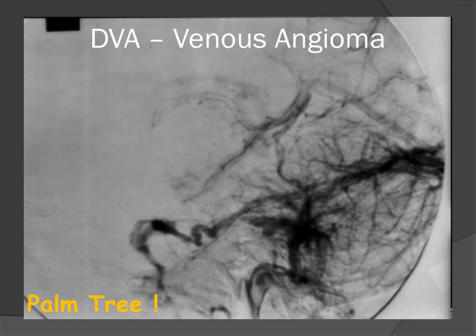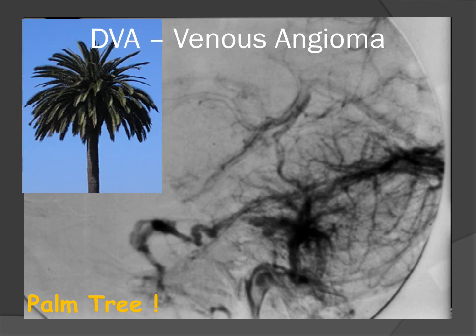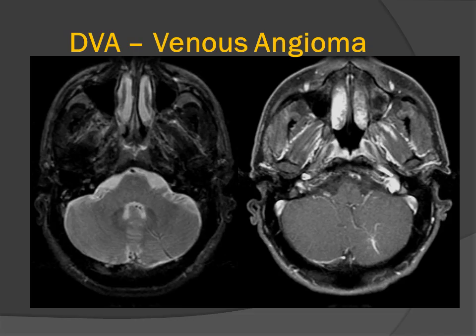In my mind, the developmental venous anomaly or venous angioma actually looks like a palm tree. The collector veins look like the fronds of the palm tree, and the trunk of the DVA looks like the trunk of the palm tree.